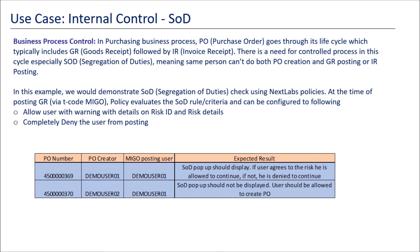This use case is on internal control, specifically segregation of duties. Let's take a look at how we can use NextLabs products to implement such SOD controls in SAP. The business process is around purchasing: you create a PO and send it to the vendor, the vendor sends the goods and you do a GR — goods receipt — and then later you send an invoice for payment. In this business process there are multiple sub-tasks, and SOD states that the same person cannot do multiple key functions in the same business process. We'll look at a scenario where when a user is creating a GR, the system evaluates whether there is any SOD risk — for example, if he is trying to do the GR for the same PO that he himself created.